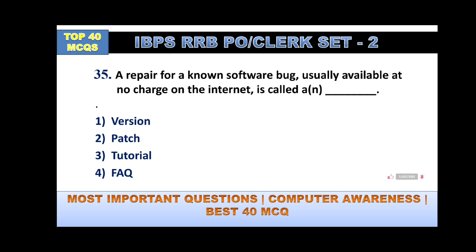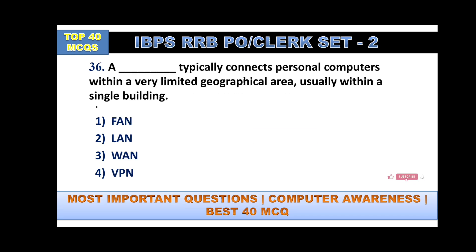A repair for a software bug, usually available at no charge on the internet, is called a patch. A device that typically connects personal computers within a very limited geographical area, usually within a single building, is a Local Area Network — option number two. WAN means Wide Area Network and VPN means Virtual Private Network.